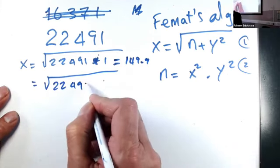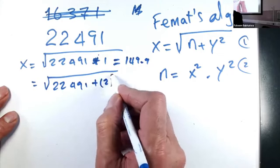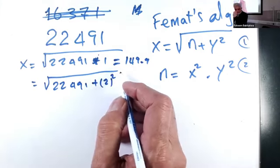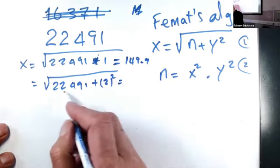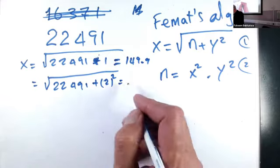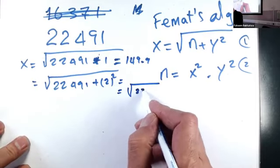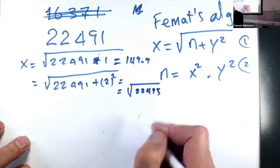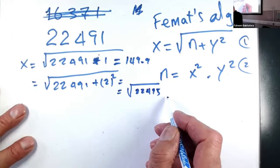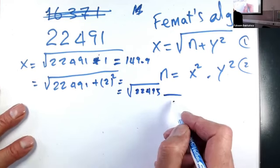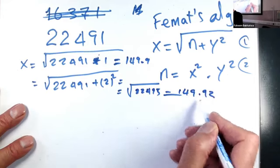So it's 22491 plus two squared. Is that a square? And that's 22495. Is that right? And is there a square root here? No. Again it's 149.93 or something like that.